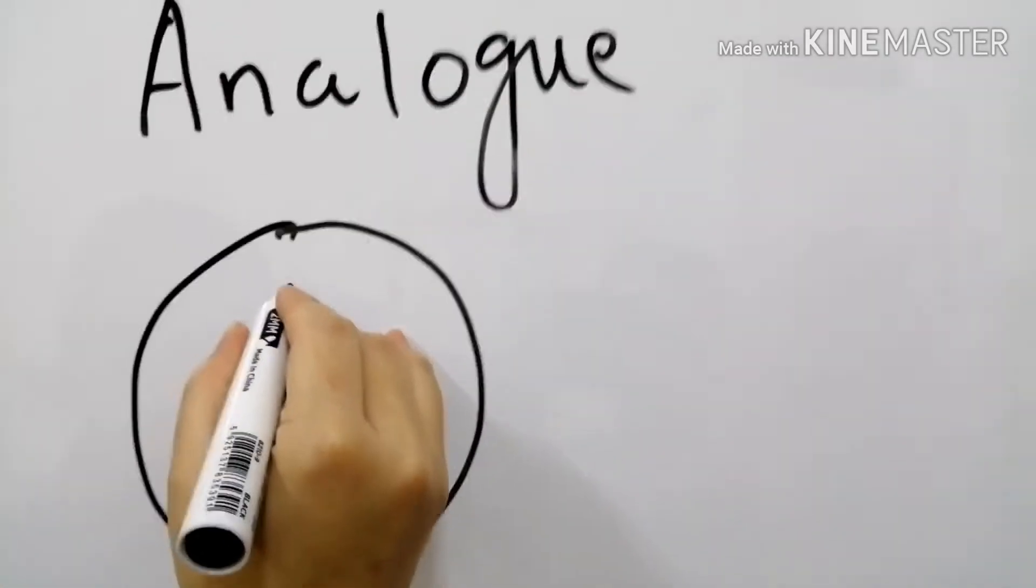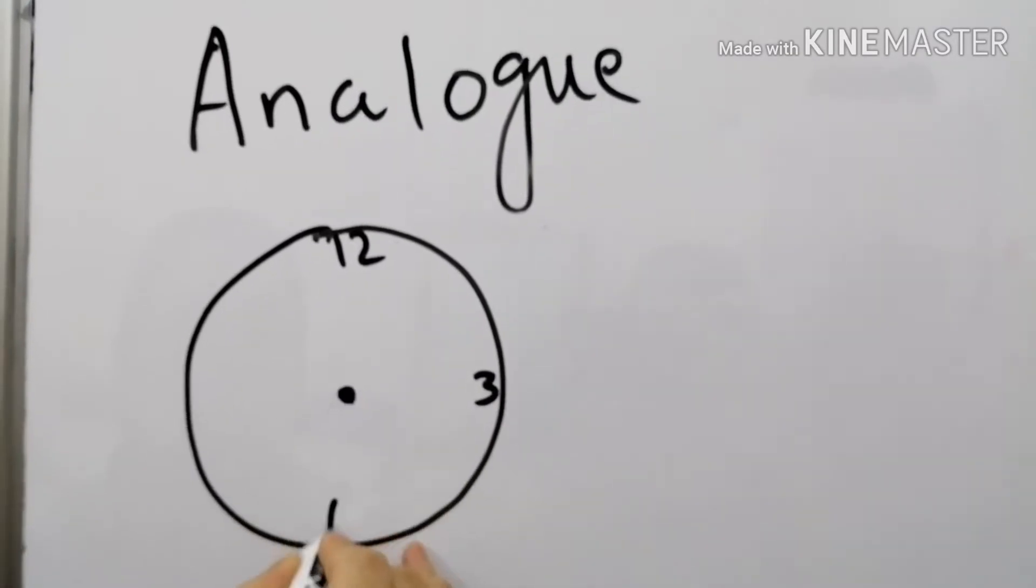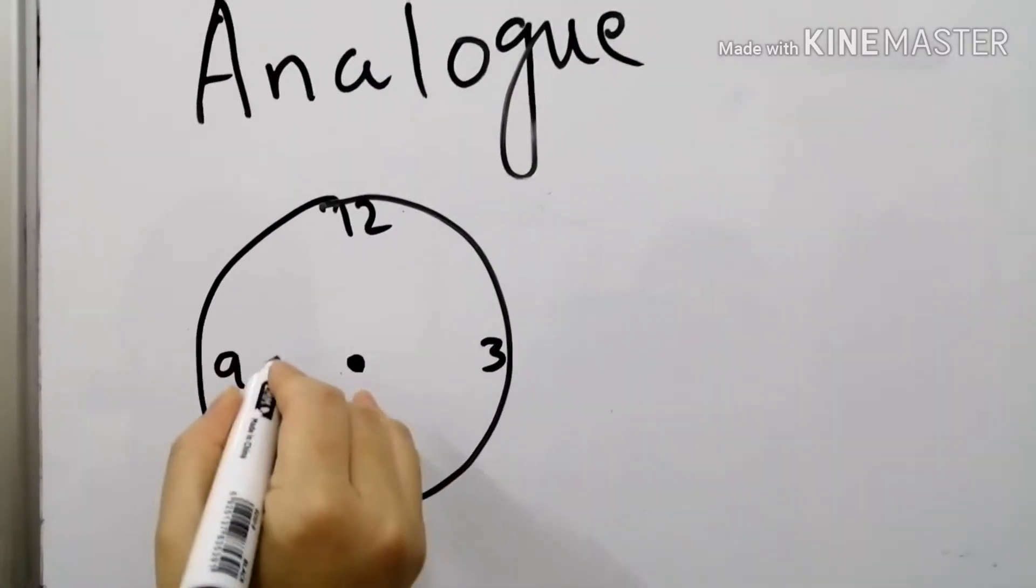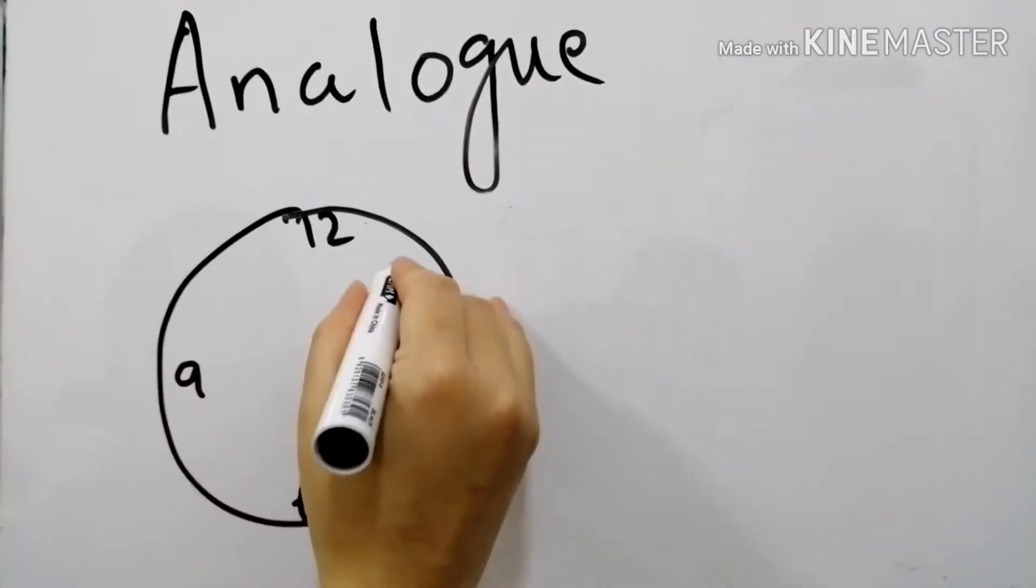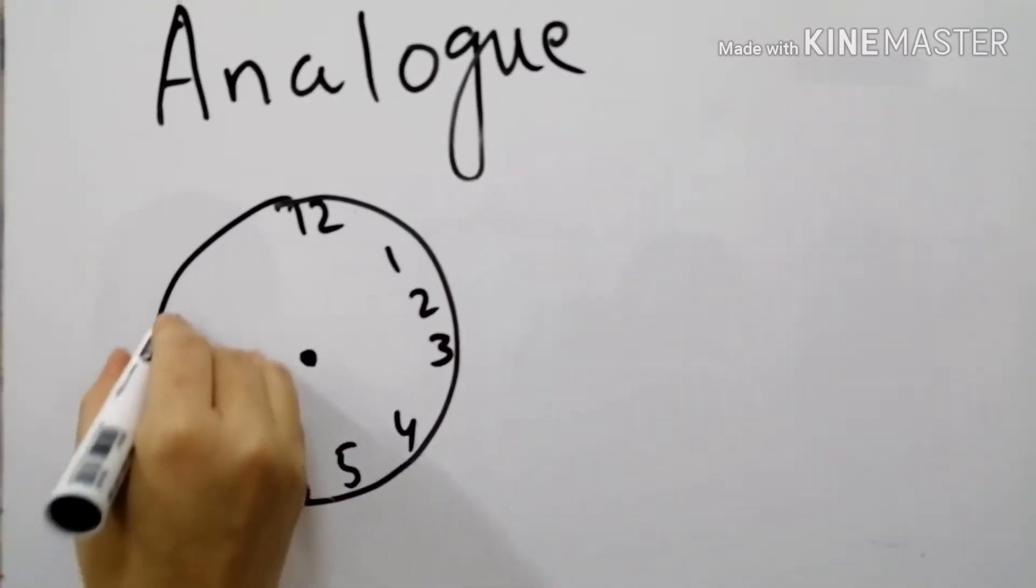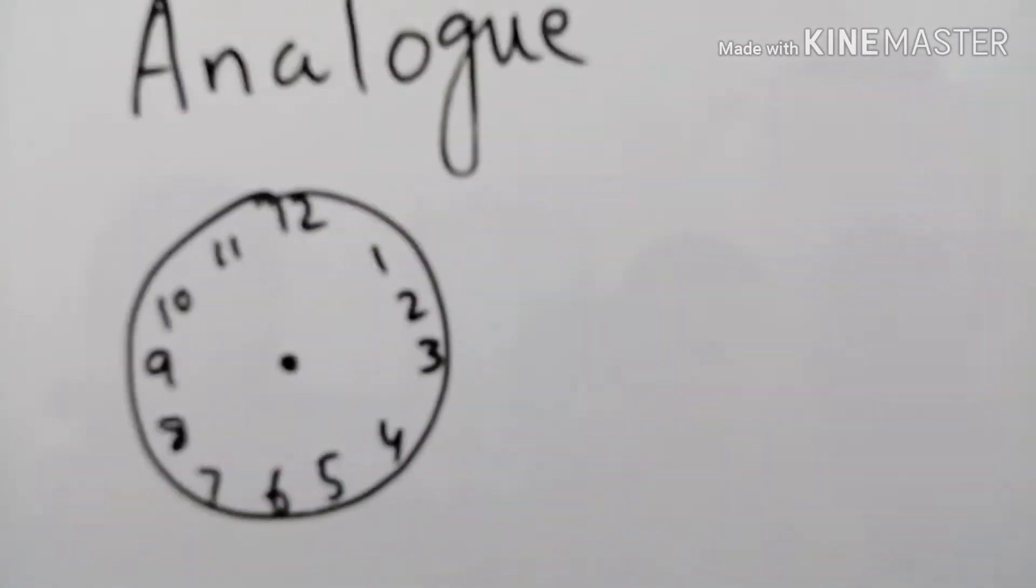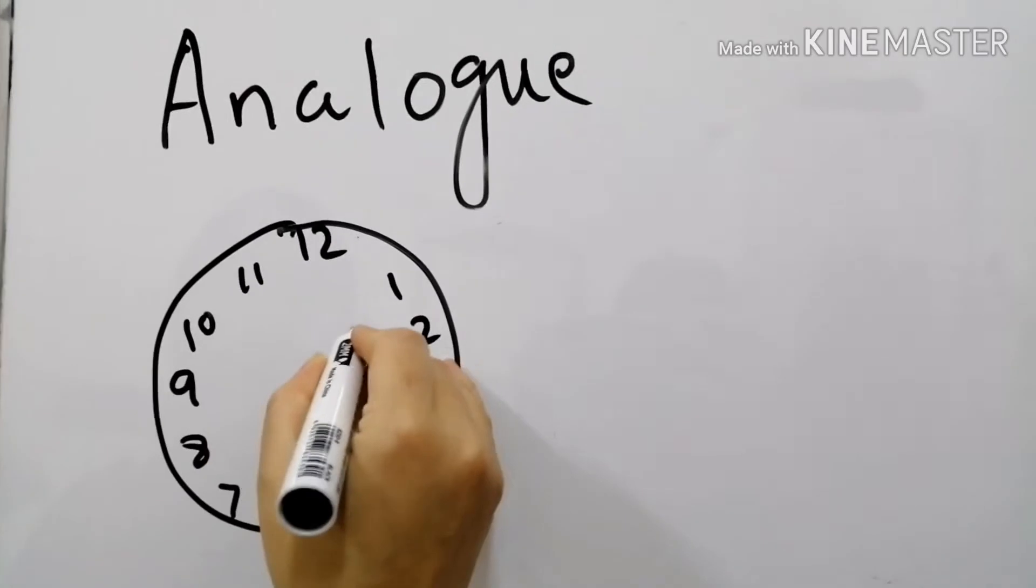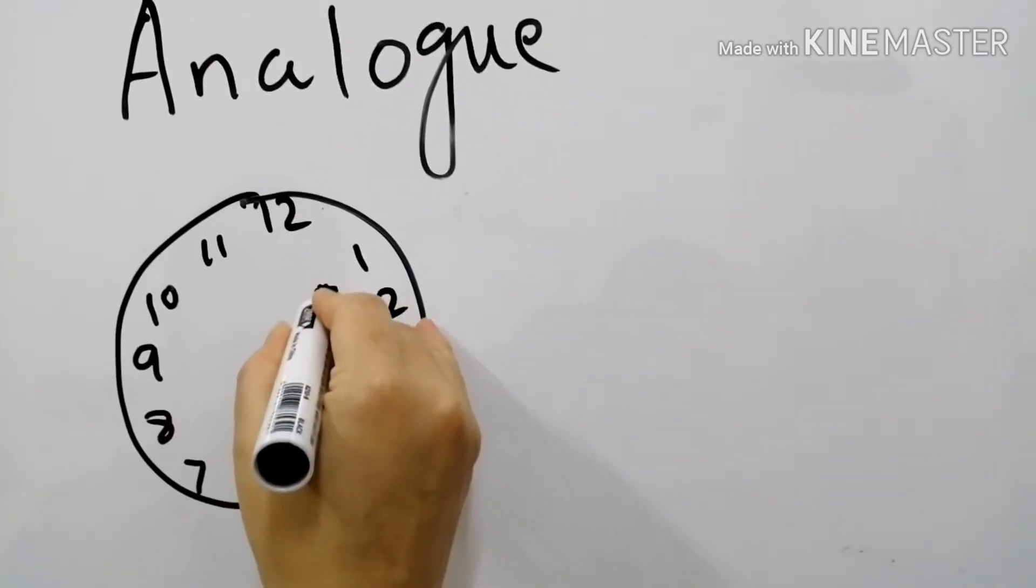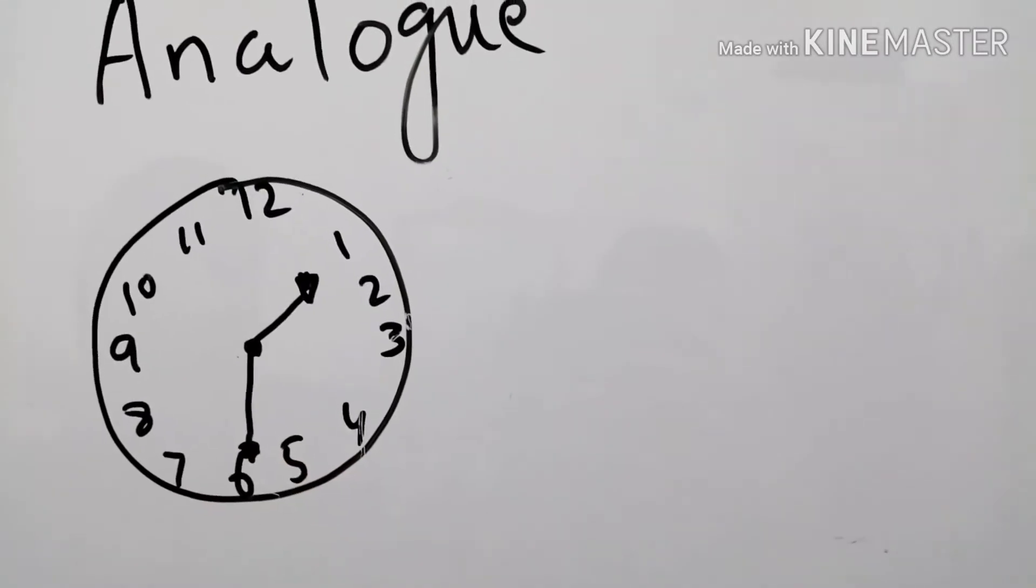The clock showing time by the hands of a clock or watch. This is the analog clock. 12, 3, 6 and 9. And 1, 2, 4, 5, 7, 8, 10, 11. So in this clock we will show the time. 1, 30. Great.